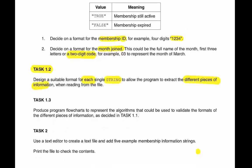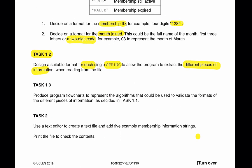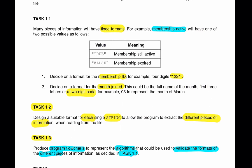Okay, so Task 1.3 says to produce program flowcharts to represent the algorithm that could be used to validate the formats of different pieces of information as decided in Task 1.1. So in Task 1.1 there are two pieces